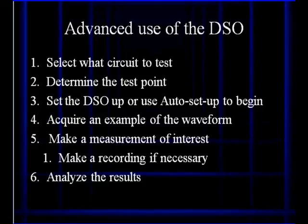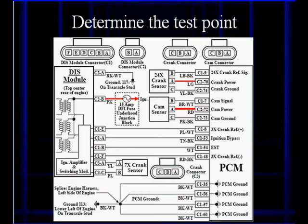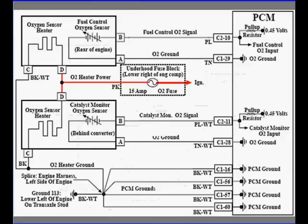Let's look at how we decide to start this. We select what circuit we need to test and determine where is the best test point. Then we set up the DSO or use an auto setup procedure to begin the testing. Acquire an example of the waveform if possible. Make measurements of interest, make a recording if necessary. We start off with a complex thing like a DIS module with lots of signals going on.